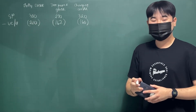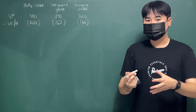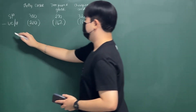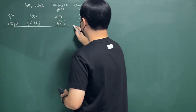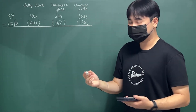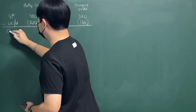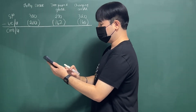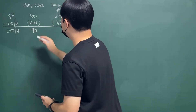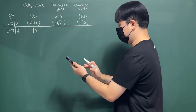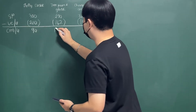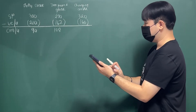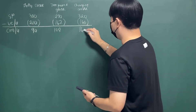The starting point for any CVP analysis is knowing the contribution margin per unit. We get the difference of selling price and variable cost for each product: 300 minus 210 gives 90 for jelly cases; 270 minus 162 gives 108 for tempered glass; and 320 minus 160 gives 160 for charging cords.